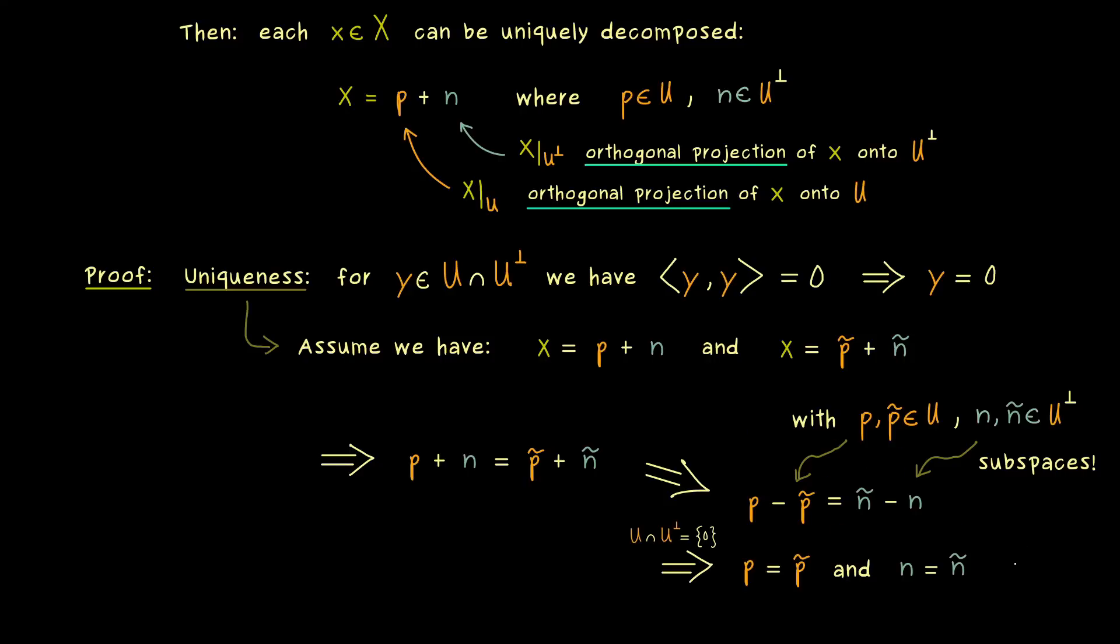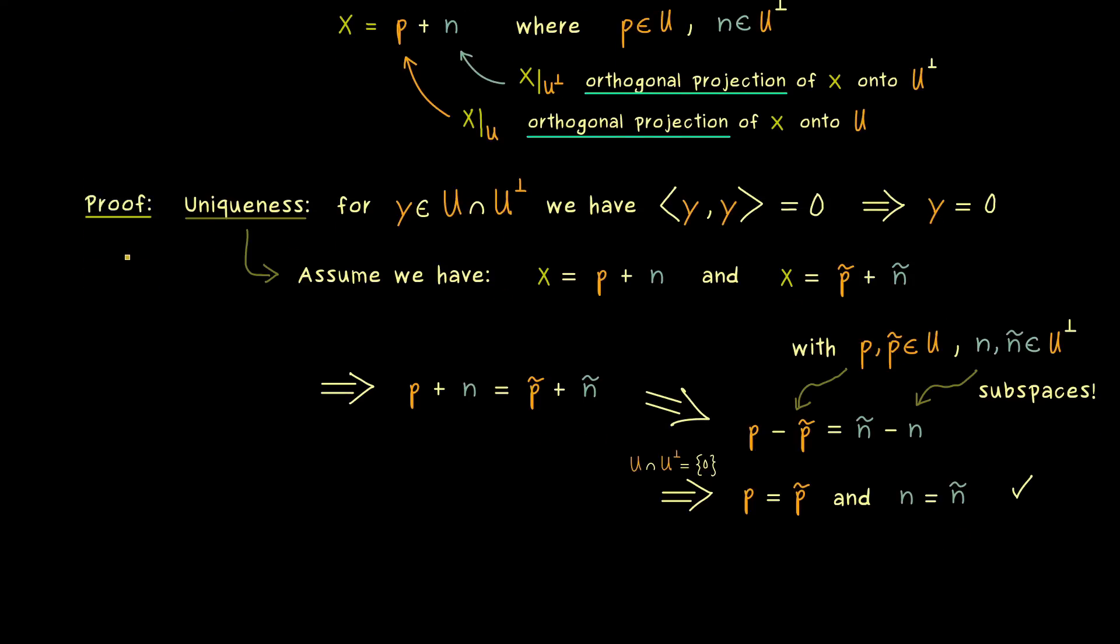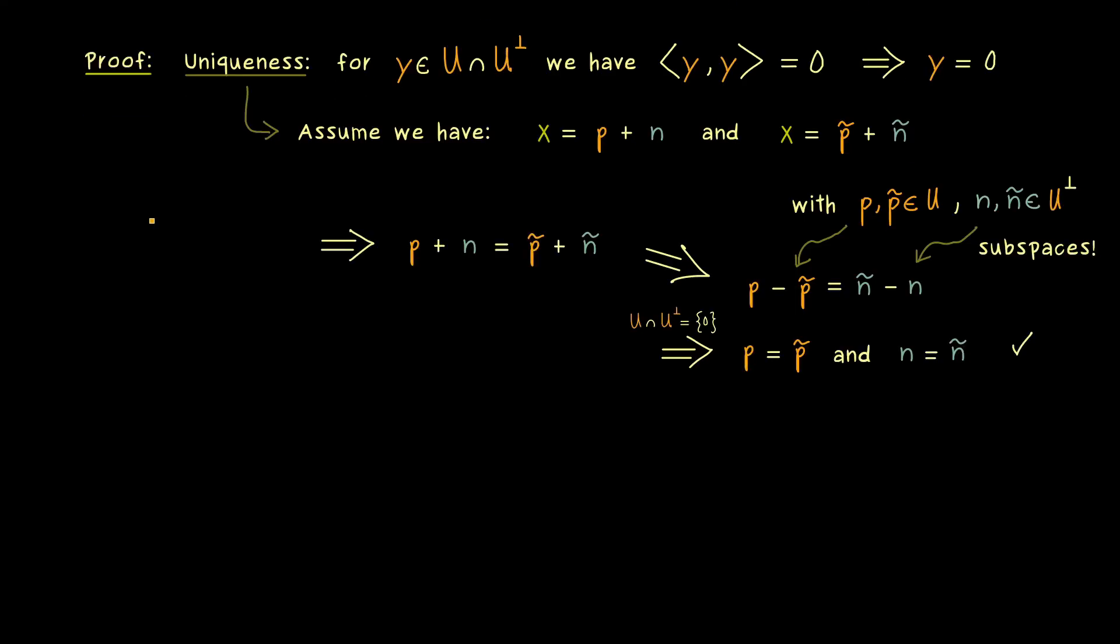Which means p and p tilde are the same vector and n and n tilde are the same vector. So the conclusion is, we cannot have two different decompositions, the uniqueness is given. Therefore, the next step is showing the existence of the orthogonal projection.